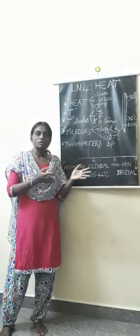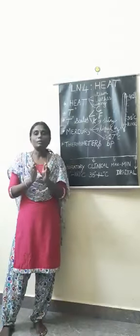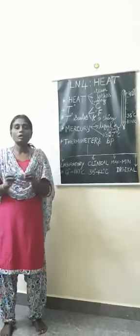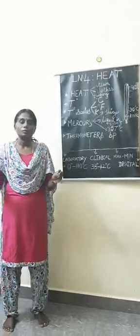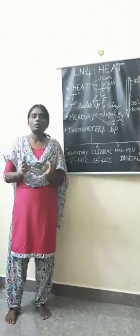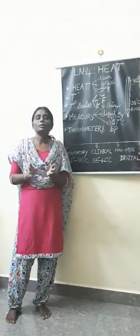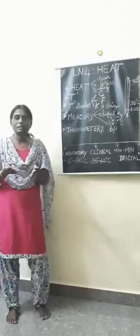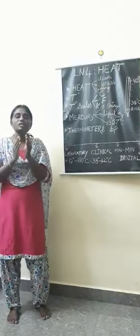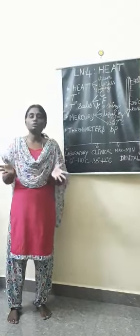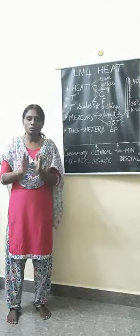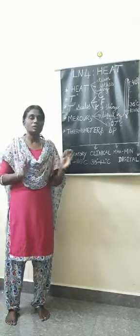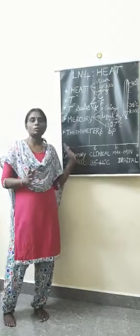After measuring and using the thermometer, we have to wash it properly. Then we have to keep it in a horizontal position. Why horizontal? Because it is made of glass, and if it is broken it is very difficult to dispose of because of the mercury. So we have to keep it safe. That is all about the laboratory thermometer.